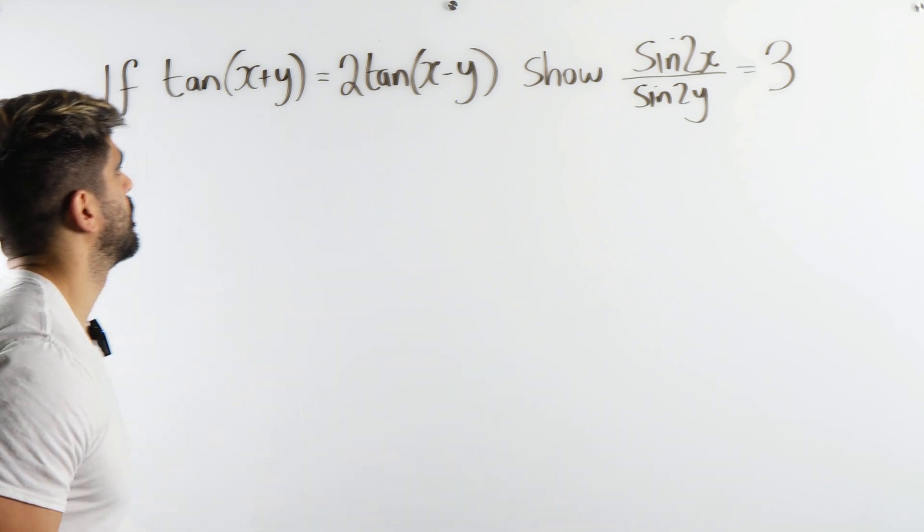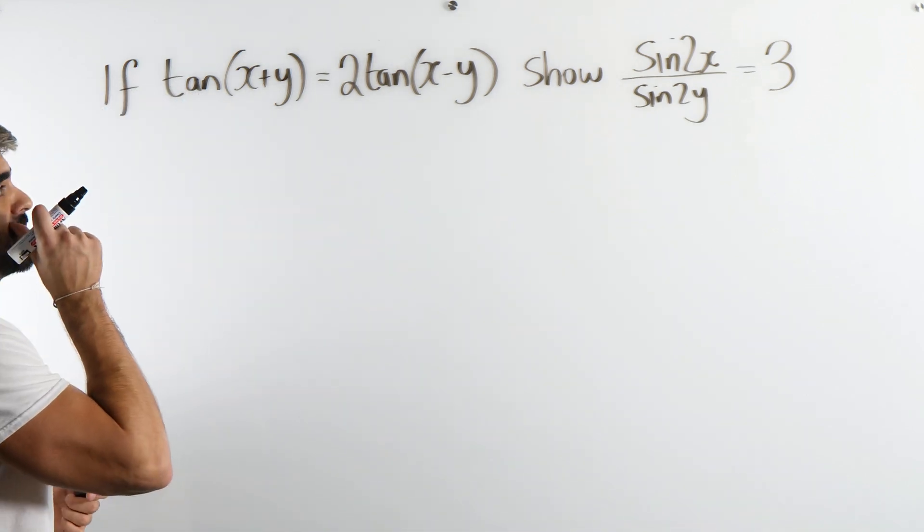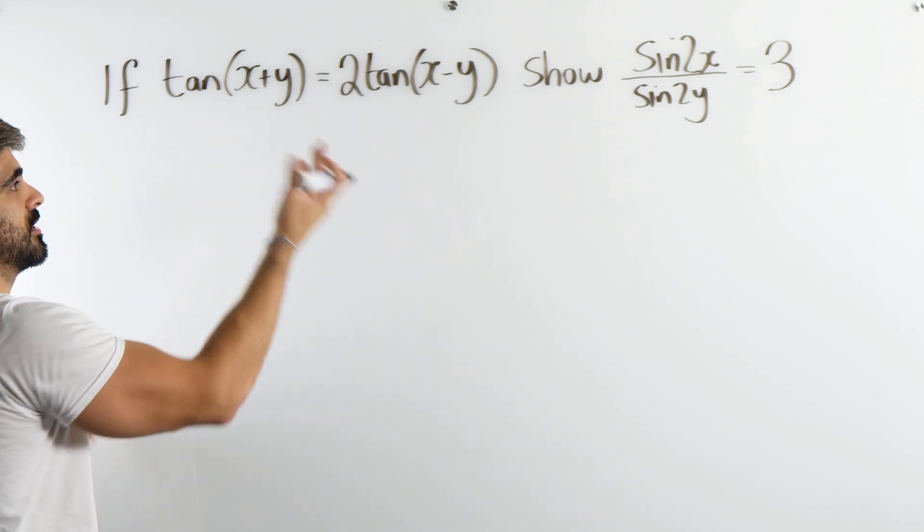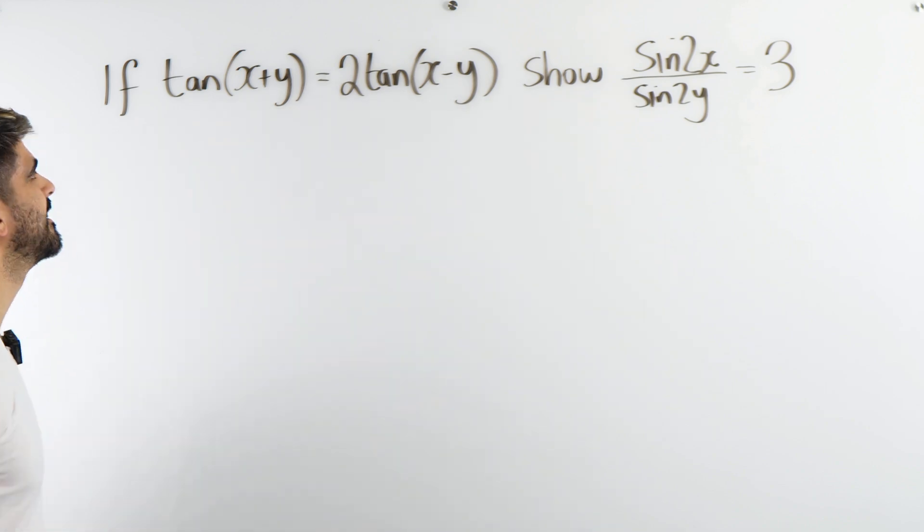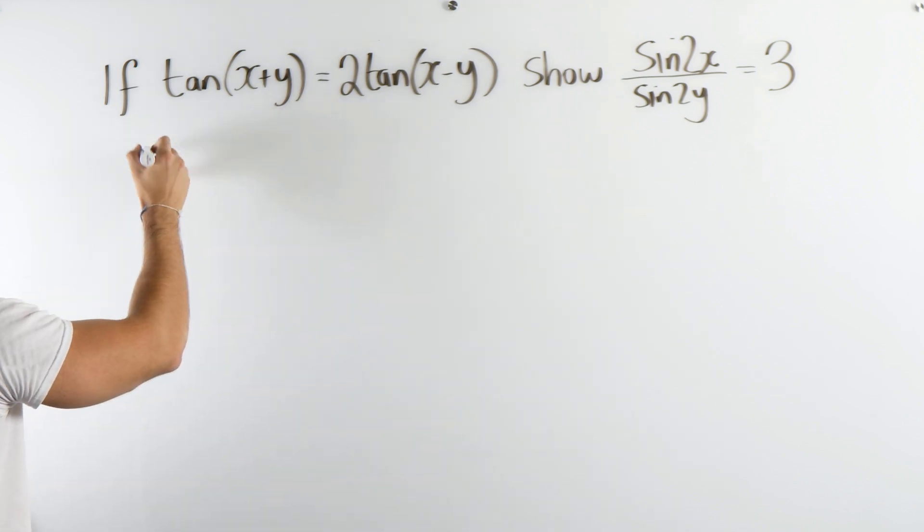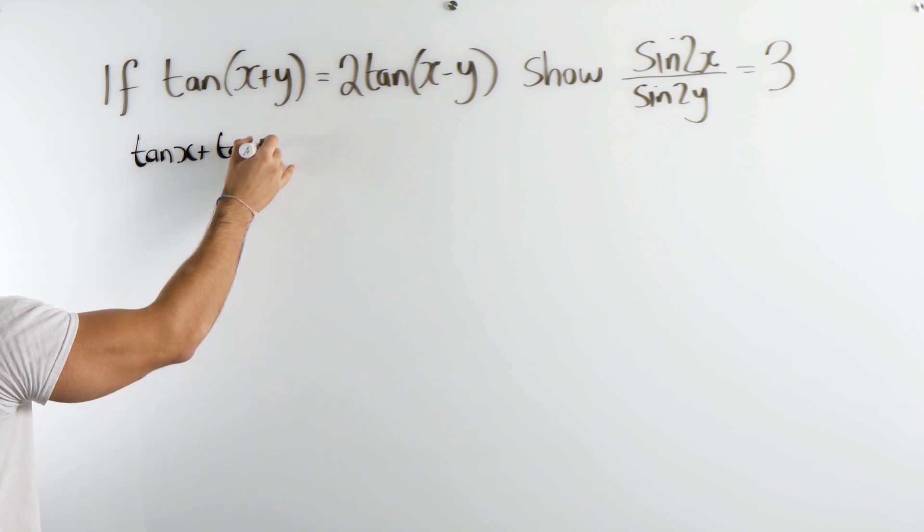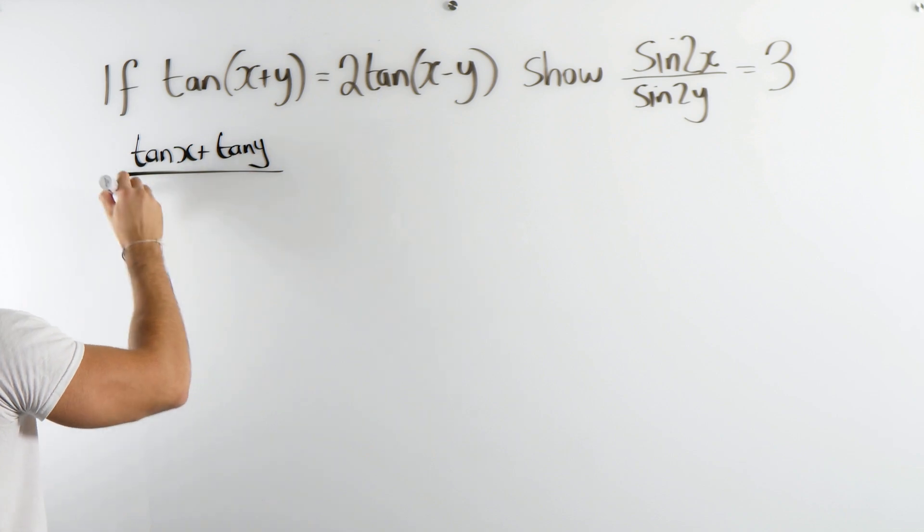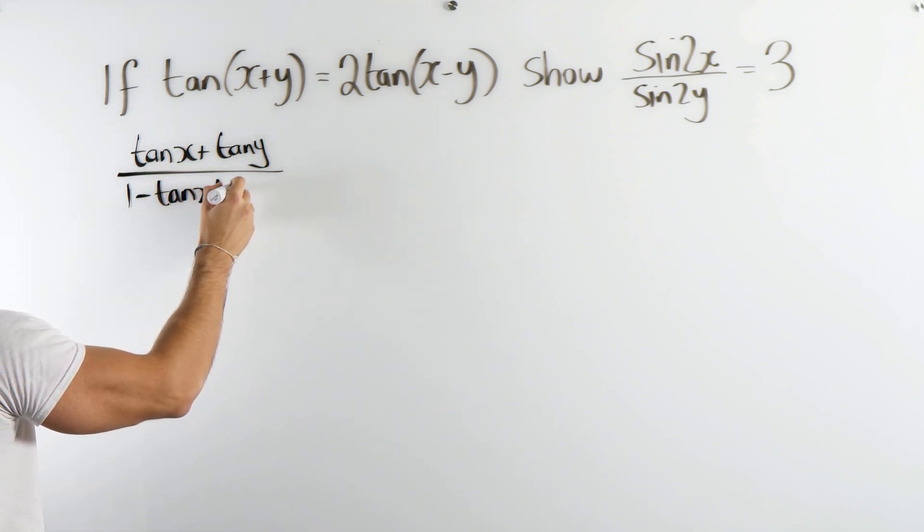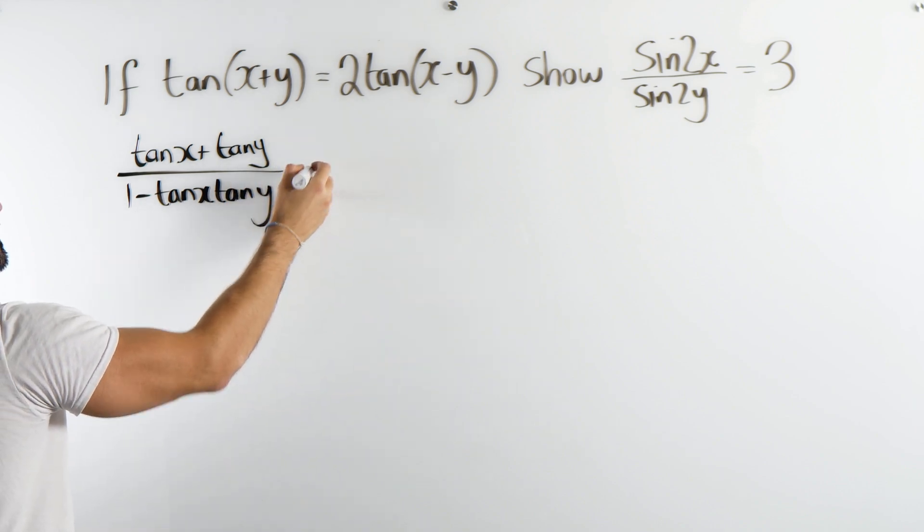Well I guess the first thing we should be doing then is just doing the addition rules. So tan(x+y), we're going to get tan x plus tan y divided by 1 minus, multiply them together, tan x times tan y.